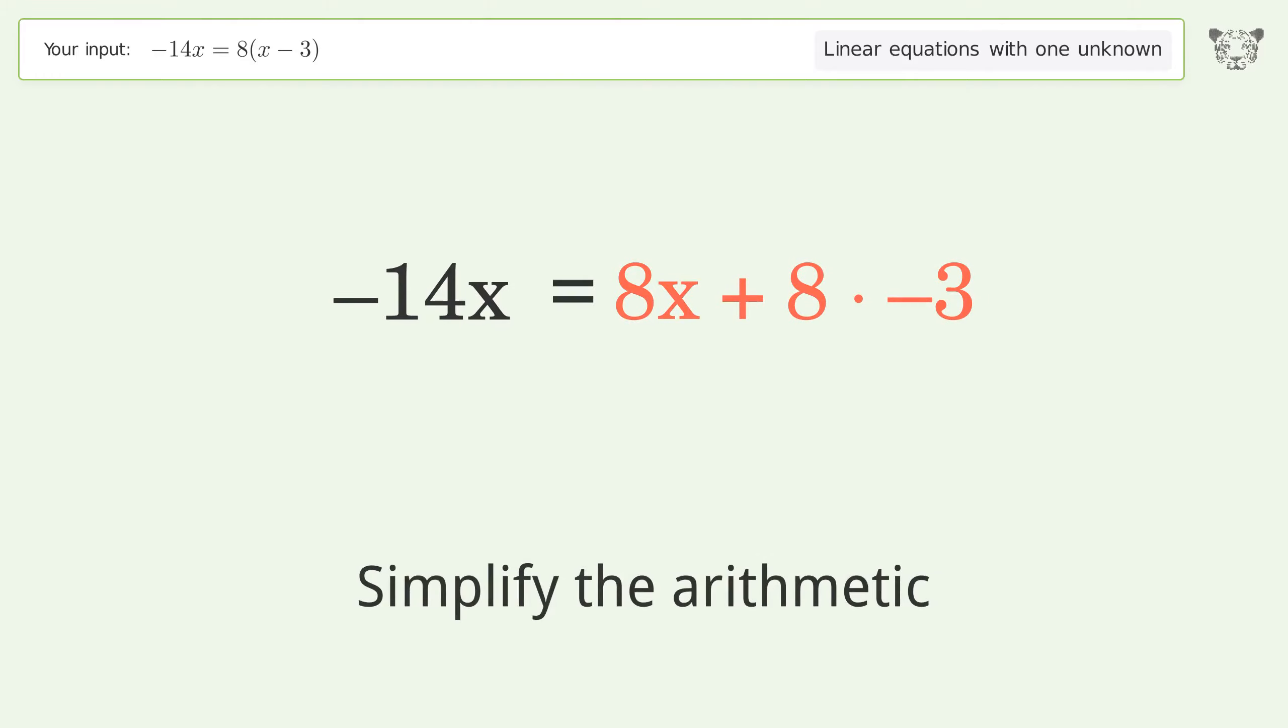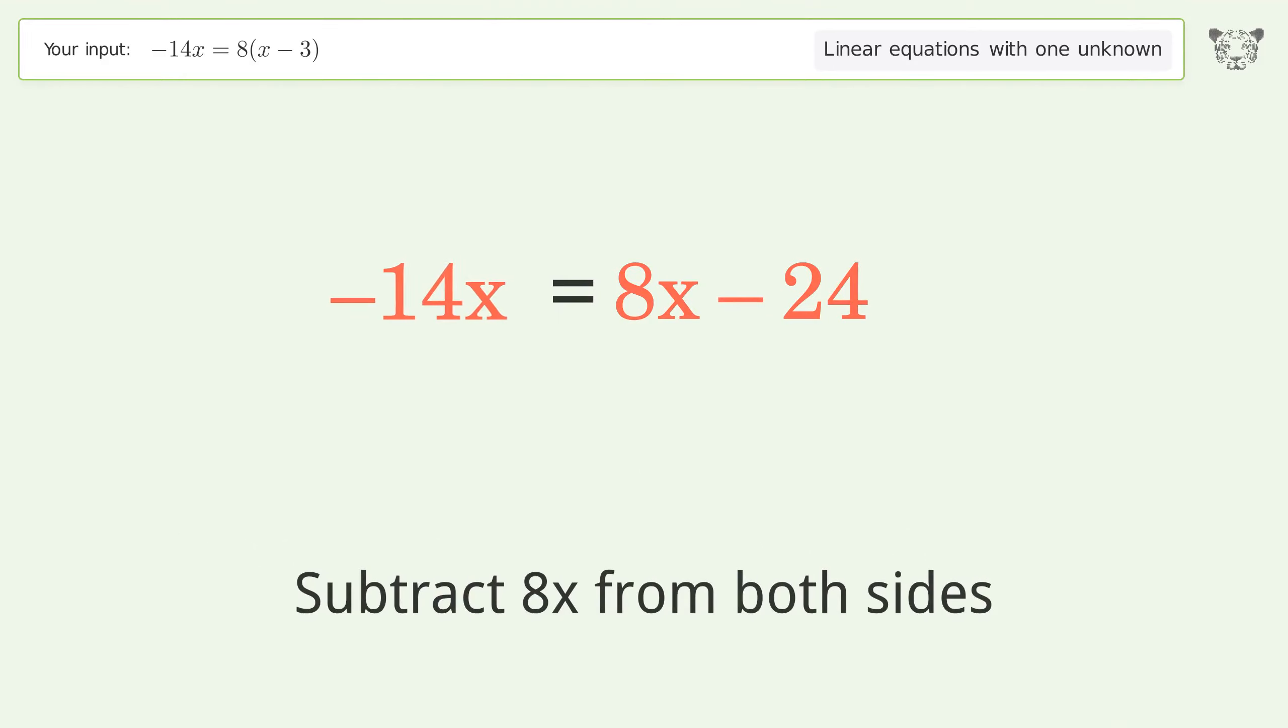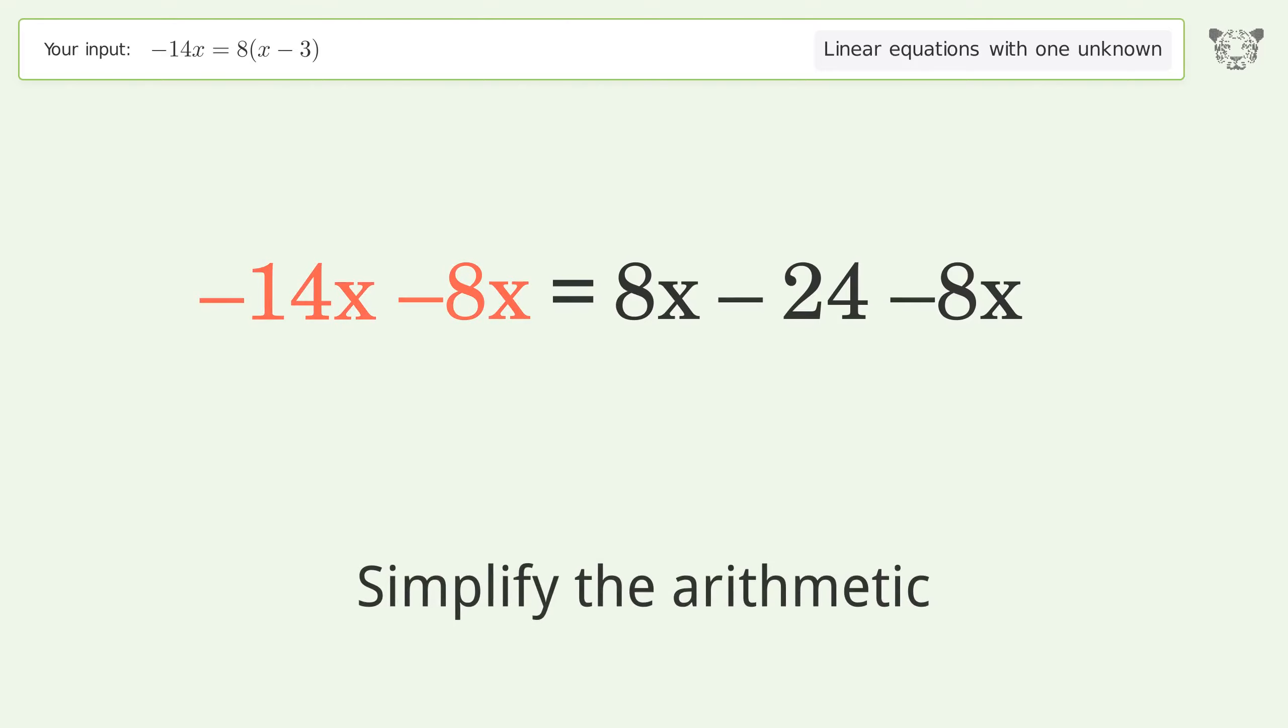Simplify the arithmetic. Group all x terms on the left side of the equation. Subtract 8x from both sides. Simplify the arithmetic.